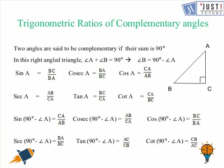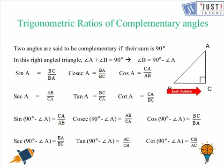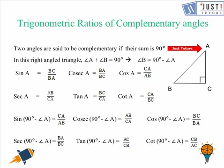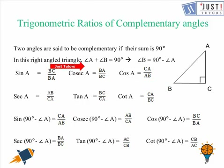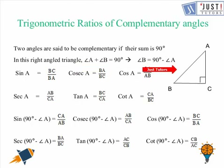We will be learning about the trigonometric ratios of complementary angles. If we are given a right angle triangle ABC which is right angled at C, we first need to find a pair of complementary angles in it. We can work out that A and B are two angles whose sum is equal to 90 degrees. Since A plus B plus C equals 180 degrees, we get that angle B is equal to 90 degrees minus A.